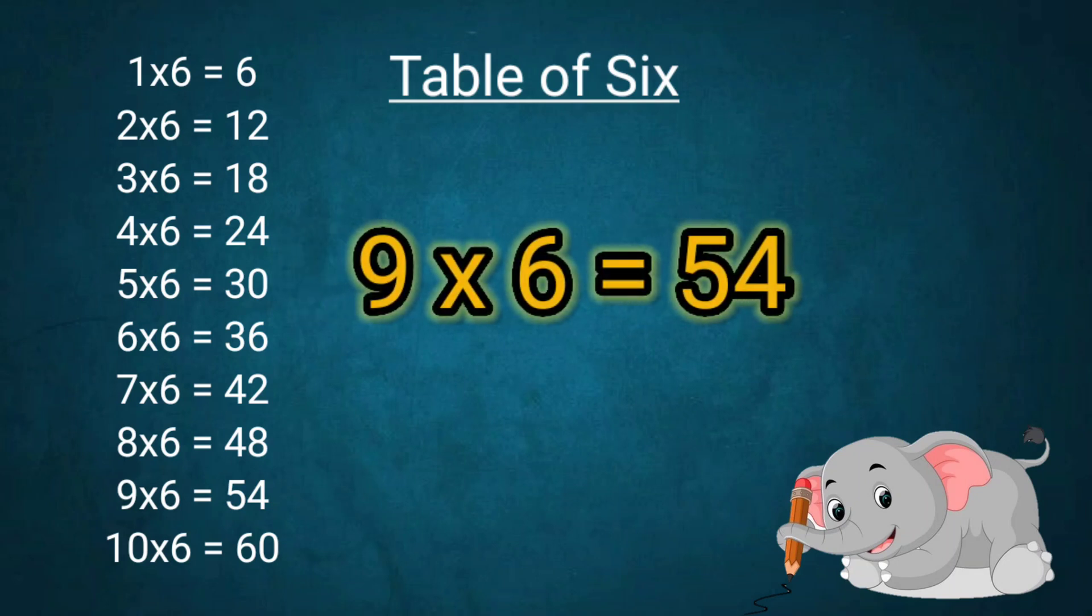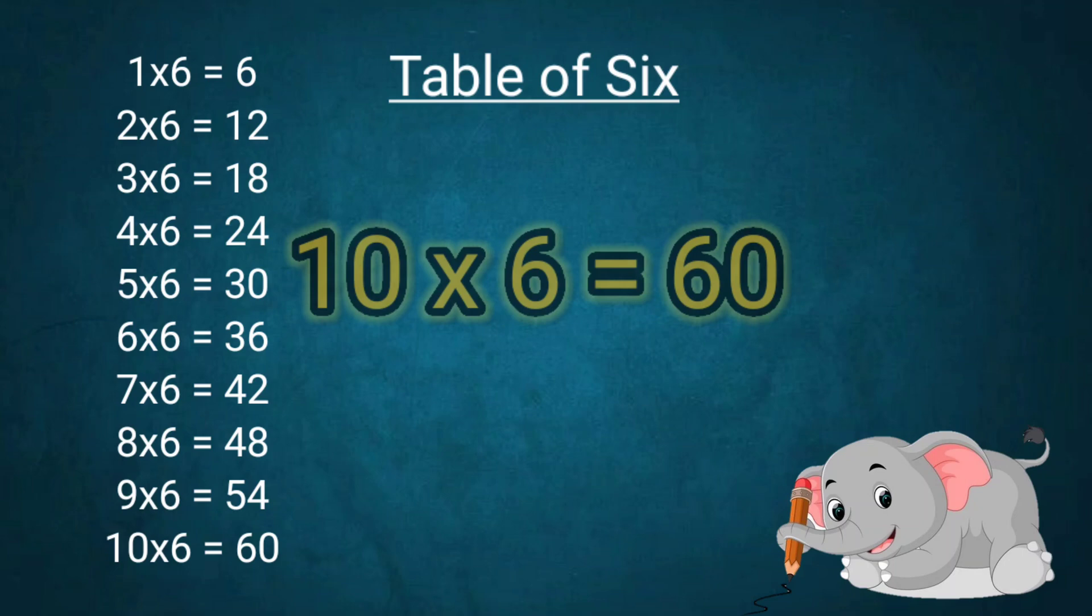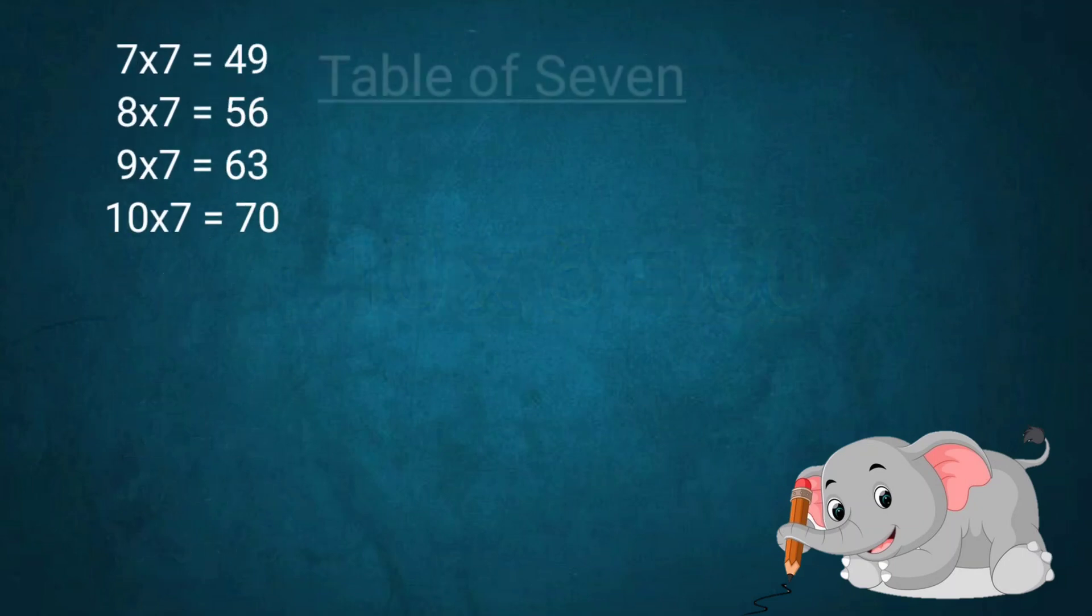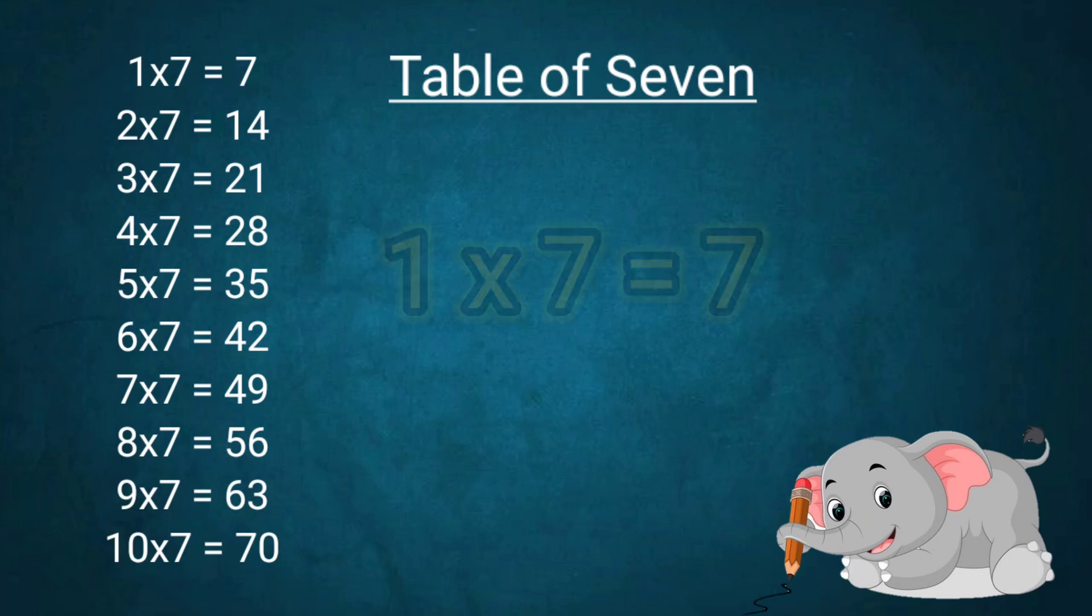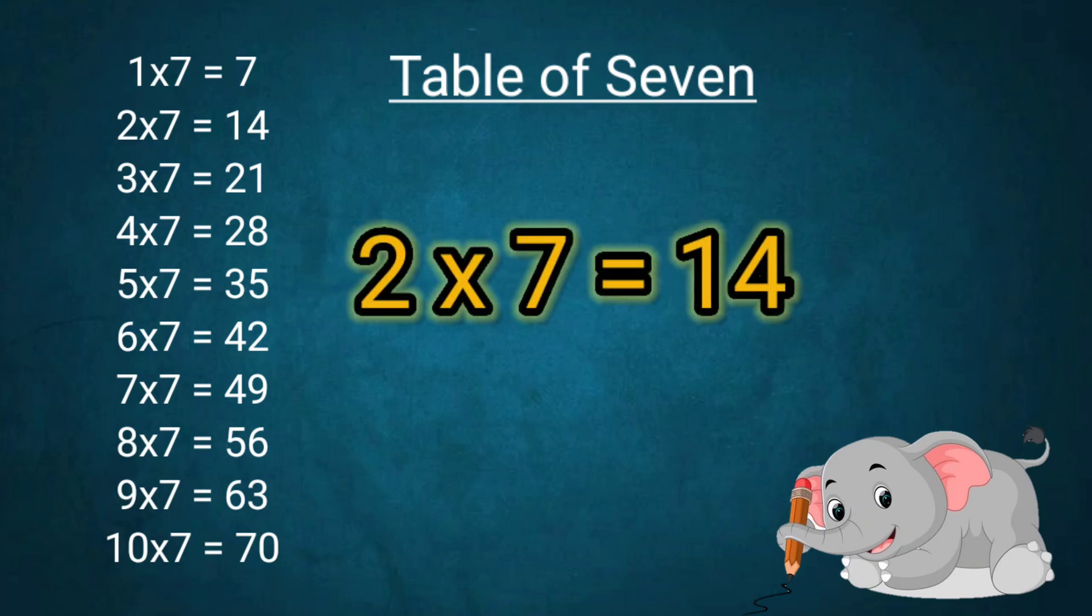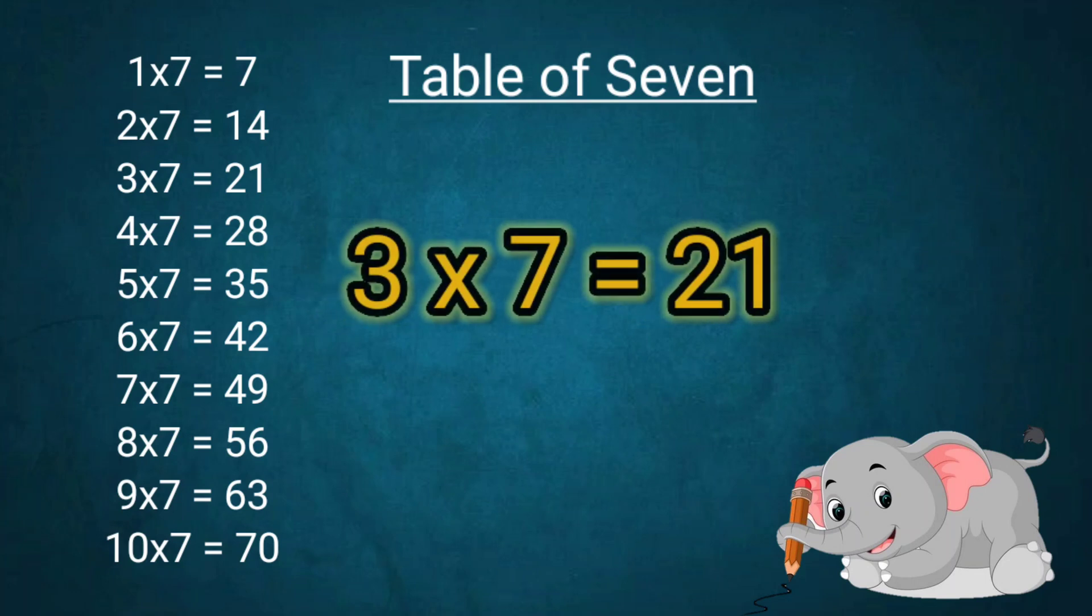9x6=54, 10x6=60. Table of 7: 1x7=7, 2x7=14, 3x7=21.